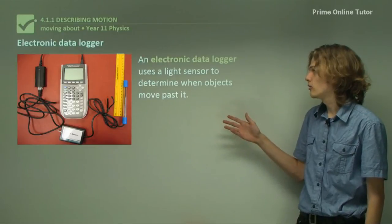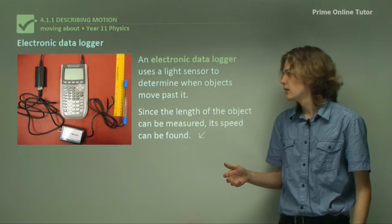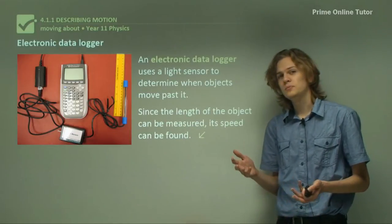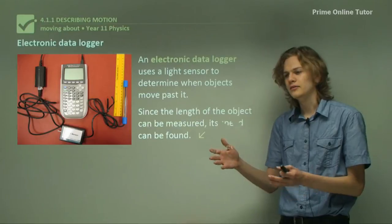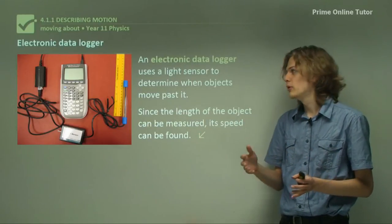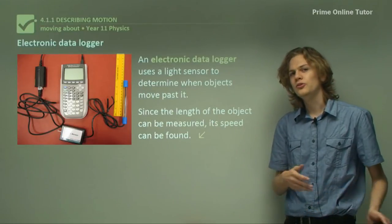An electronic data logger uses a light sensor to determine when objects move past it. And because you know the length of the object that you want to measure, you can find its speed simply by figuring out how far it's gone. The distance it will travel between the times that the data logger picks it up will be equal to the distance traveled.